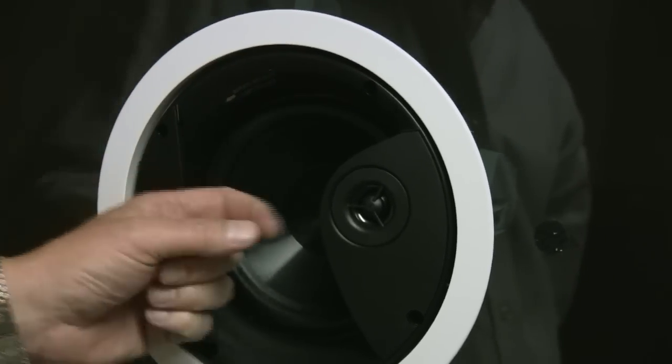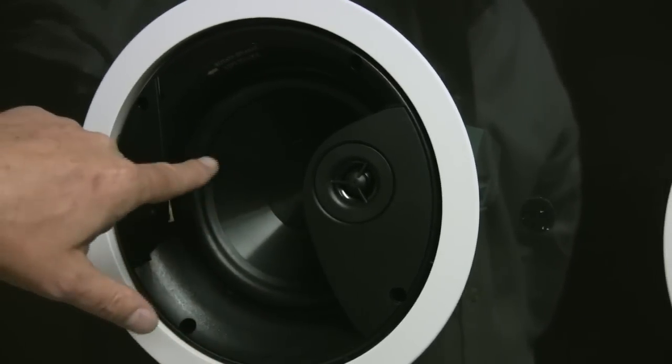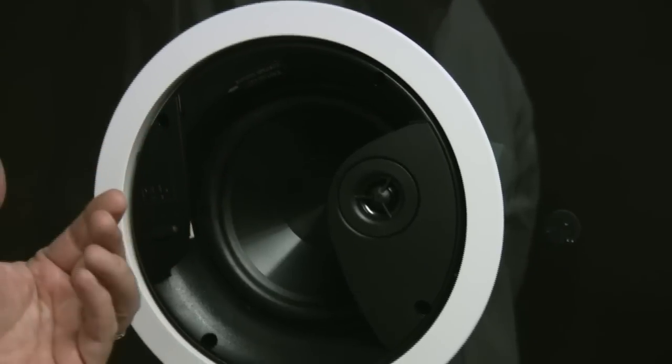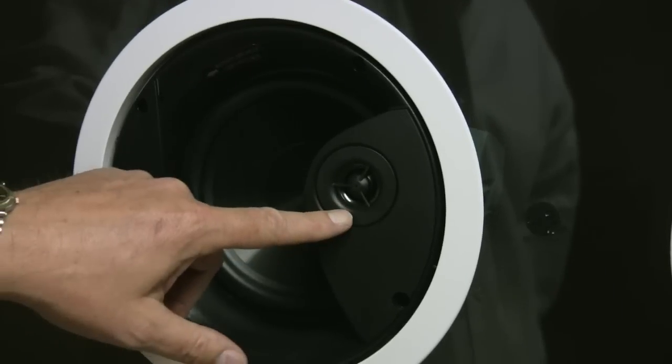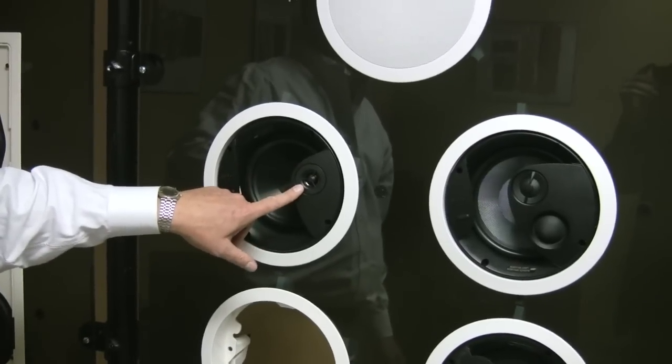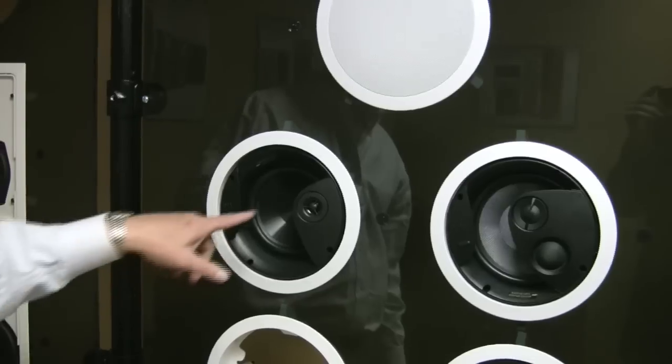The other problem with having a tweeter mounted right in the center is all the sound that diffracts off the edge of the surface hits the cone and comes back out and mixes with the sounds coming from the front surface of the tweeter. And the sounds that are back here are not in phase with the sounds that are coming up here, and so they tend to make the sound of the tweeter sound muddier and not nearly as good.